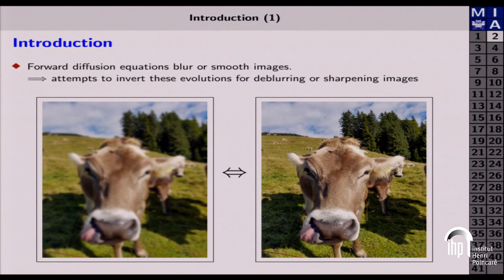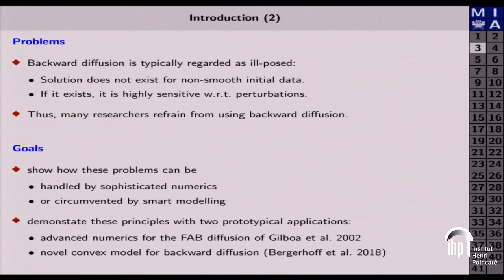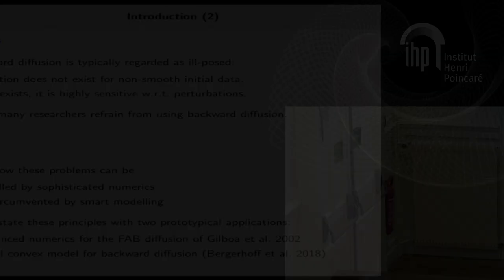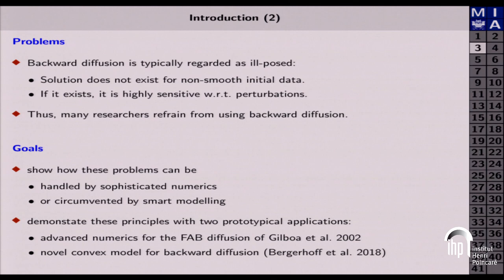What is it all about? We all know that if you apply forward diffusion it has a smoothing and blurring effect. If you apply backward diffusion instead, you can potentially benefit from deblurring and sharpening results. But there is a big warning: backward diffusion processes have intrinsic instabilities. These are ill-posed problems — a solution might not exist if the initial data is not smooth, and even if it does exist, it may be highly sensitive to small perturbations of the data.